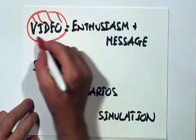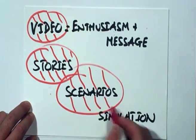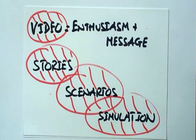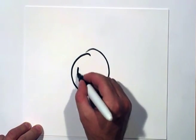It means that we should look at delivery mechanisms that combine the effective context with the knowledge, rather than stripping it away. We should use video to capture enthusiasm along with a message. Use stories, scenarios and simulation to preserve the significance.